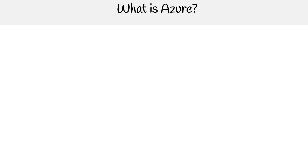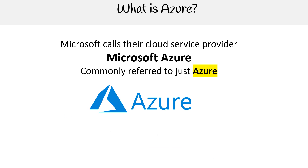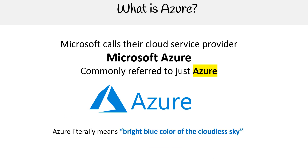So now that leads us to the question, what is Azure? Azure is what Microsoft calls their cloud service provider, and so it's called Microsoft Azure, or we commonly refer to it as just Azure. If you're wondering what is the name behind the service, Azure literally means bright blue color of the cloudless sky. You'll hear me say cloud service provider frequently throughout the cloud concepts portion of the course, and it is abbreviated to CSP. But that's what Azure is — it is a cloud service provider.